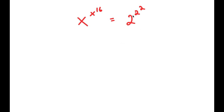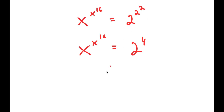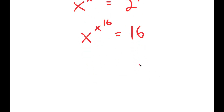To solve this, I'm going to first rewrite 2 to the power of 2 to the power of 2 as 2 to the power of 4, because 2 squared is 4, and 2 to the power of 4 is 16. So this is all equal to 16.